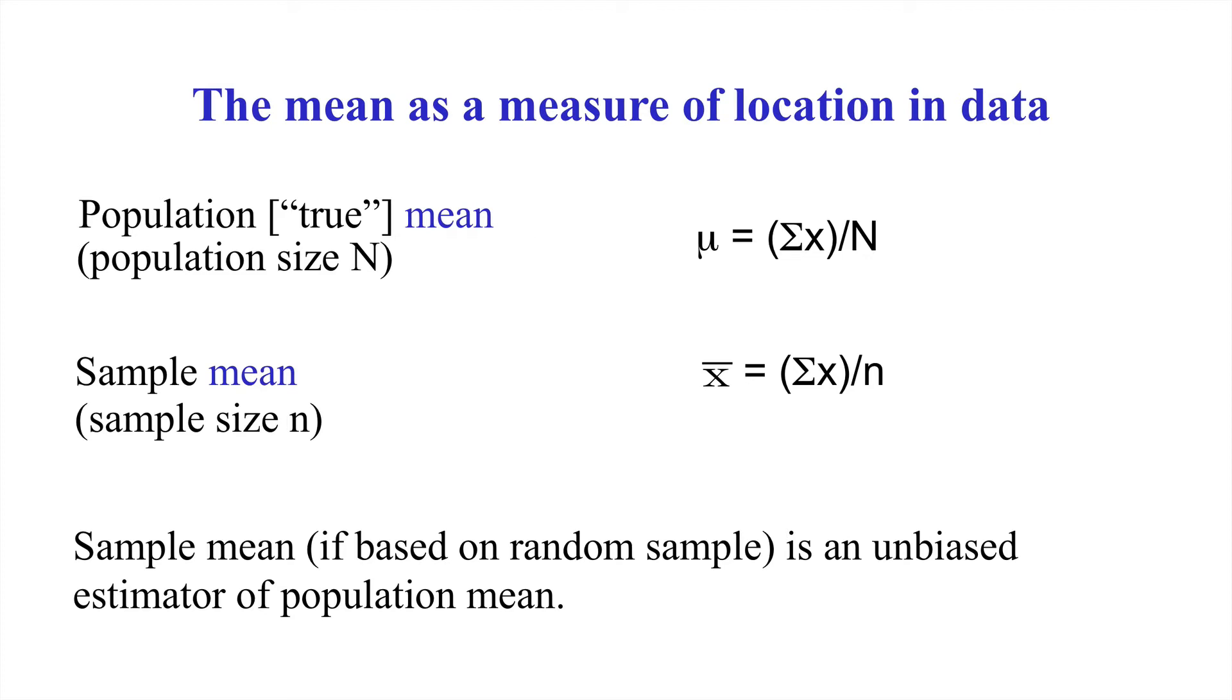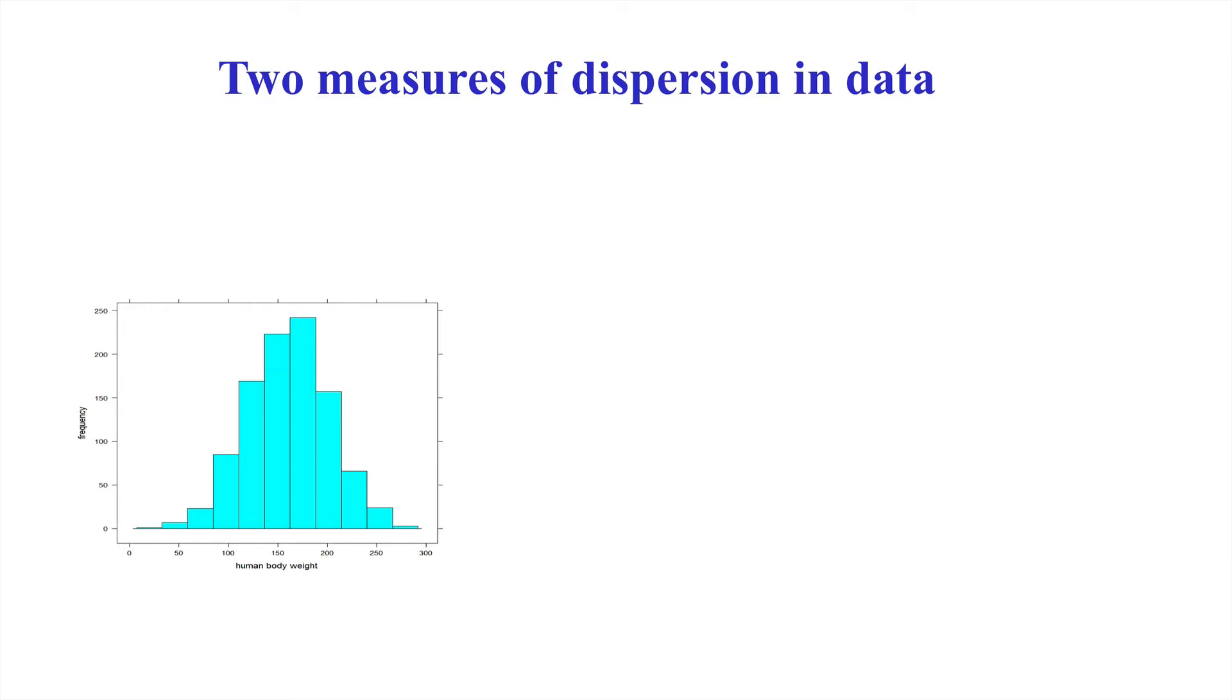What about spread in the data, sometimes called dispersion? Here is a histogram of human body weight, where we can characterize the mean as somewhere around 150. But what about the spread around that 150? Perhaps the most important measure of spread in data, if we have at least the entire population at hand, is what we call the population variance. It's the average squared deviation of all the observations from their population mean.